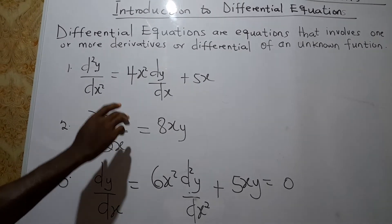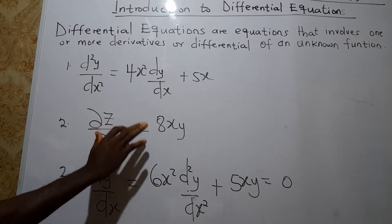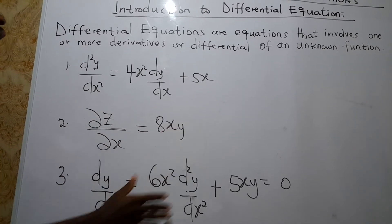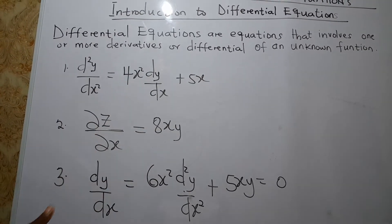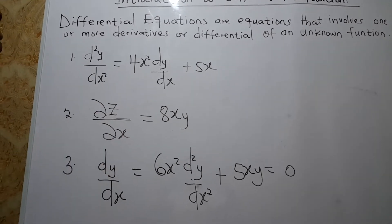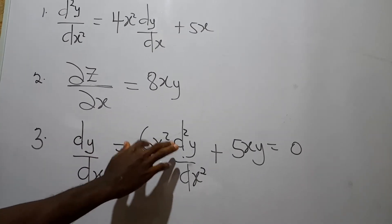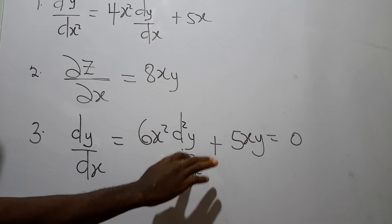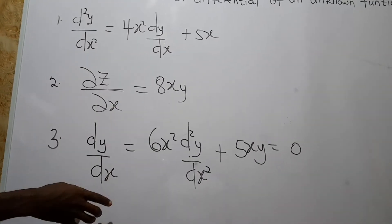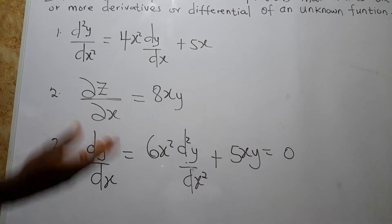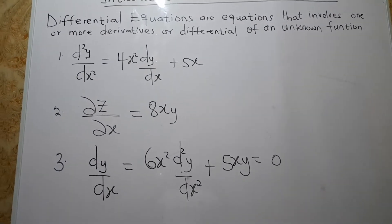Look at this one: ∂z/∂s = a·t·x·y. Notice that this uses the partial derivative notation, which is different from ordinary derivatives. As far as it contains a derivative or a differential of a function which we do not know, then the equation is a differential equation. Similarly, dy/ds = 6s² · d²y/ds² + 5sy = 0. As far as it contains a derivative or differential of a function we do not know, that equation is a differential equation.